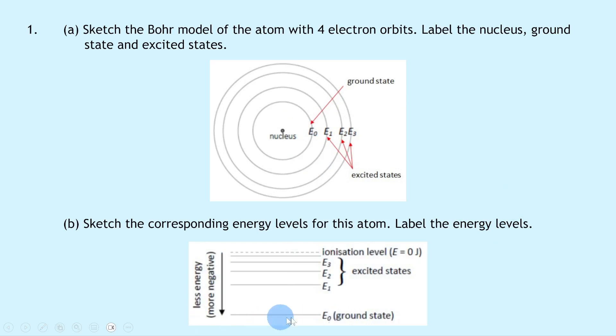We've then got our excited states E1, E2, and E3 which are separated by different gap sizes. We can label these as the excited states, and then you've got the ionization level at the top, which you don't necessarily need to draw, but it lets you see where the line is for zero joules.